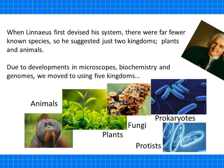Linnaeus lived in the 18th century, when far fewer species were known, and he suggested just two main kingdoms: plants and animals. As evidence from microscopy improved and biochemical understanding progressed, new models were devised. We then moved to using five kingdoms: animals, plants, fungi, prokaryotes, and protists.